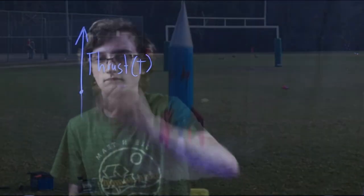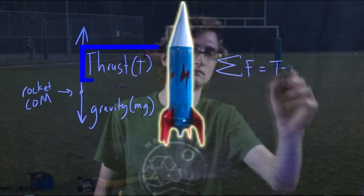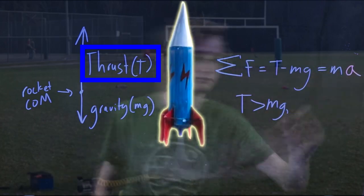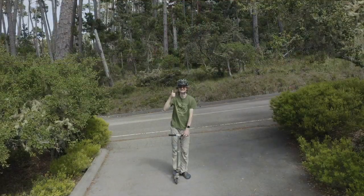So as propellant is ejected and exerts a force downward, the rocket will experience an equal but opposite force called thrust pushing it up. And if thrust is enough to overcome gravity, then it will accelerate upwards.